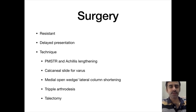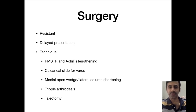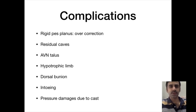Surgery is reserved for resistant club foot and delayed presentation. Surgical techniques include posterior medial soft tissue release and Achilles lengthening, calcaneus slide for varus, medial open wedge lateral column shortening, triple arthrodesis, and talectomy. The most commonly used technique is posterior medial soft tissue release and Achilles lengthening. Complications include rigid pes planus due to overcorrection, residual cavus, avascular talus, hypertrophic limb, dorsal bunion, in-toeing, and pressure damage due to cast.